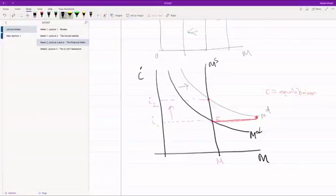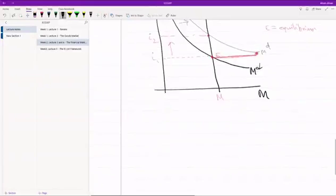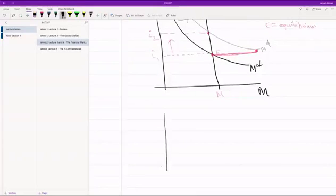Similarly, let's look at another example. Once again, we have M here, this is money demand, this is money supply.